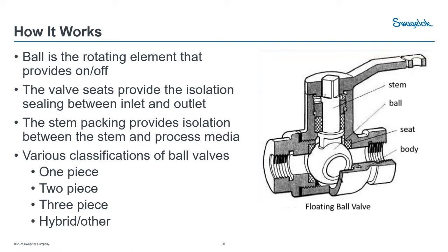One other thing to note on isolation and sealing is the stem packing. The stem packing is a seal that sits up top and basically seals your process media from the outside atmosphere. We see a lot of stem leakage in surveys across all valves, not just ball valves. We want to pay attention to that packing — we need to know what it's made of, that it's compatible with our system, and maintain it just like the rest of our process parts.